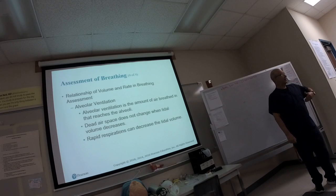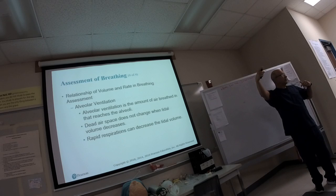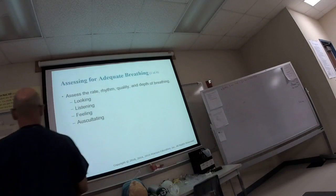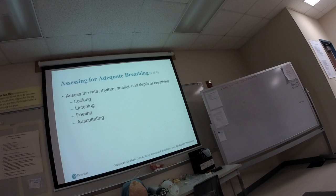From the mouth to the air sacs there's a length, so you have dead air space. Don't quote me on the number, but I think it's about 150 milliliters on average. When we assess adequate breathing, we look at the rate — 12 to 20 in an adult, with most breathing 14 to 16. It should be a regular rhythm with good tidal volume, so they should be able to get a nice big breath at a regular rate.